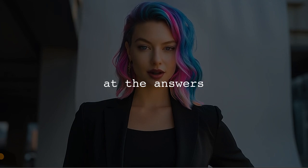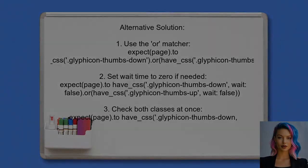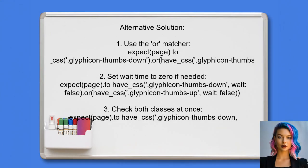Now let's look at the answers provided by other users. An alternative approach suggests using the RSpec OR matcher combinator to check for the presence of either class. First, ensure you include a dot before the class names for proper CSS selection. The code would look like this: `expect(page).to have_css('.glyphicon-thumbs-down').or have_css('.glyphicon-thumbs-up')`.